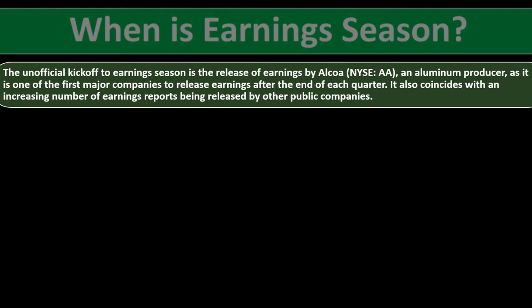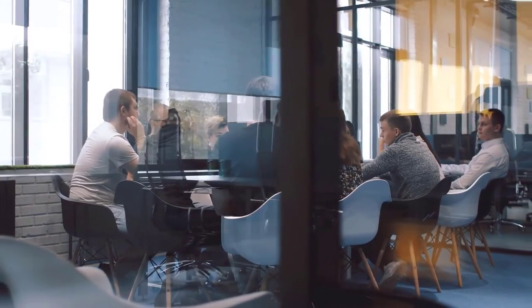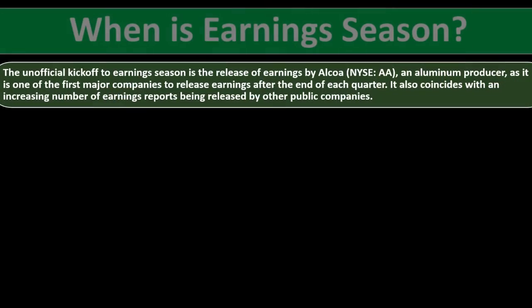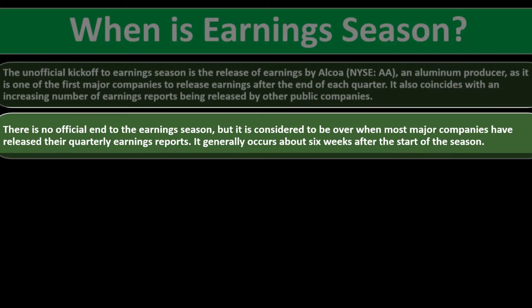The unofficial kickoff of earnings season is the release of earnings by Alcoa — NYSE: AA — an aluminum producer, as it is one of the first major companies to release earnings after the end of each quarter. When you see AA release their earnings, you know the floodgates are opening. It also coincides with an increasing number of earnings reports being released by other public companies.